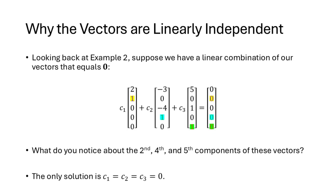Let's see how this works for our solution. We had three vectors and three free variables. The first vector has a 1 in its second entry, while the other two have 0s there. The second vector has a 1 in its 4th entry, and the others have 0s there. The third vector has a 1 in its 5th entry, and the others have 0s there. For a linear combination to equal the zero vector: c1 must be 0 (second entry), c2 must be 0 (fourth entry), and c3 must be 0 (fifth entry). That proves these vectors are linearly independent.